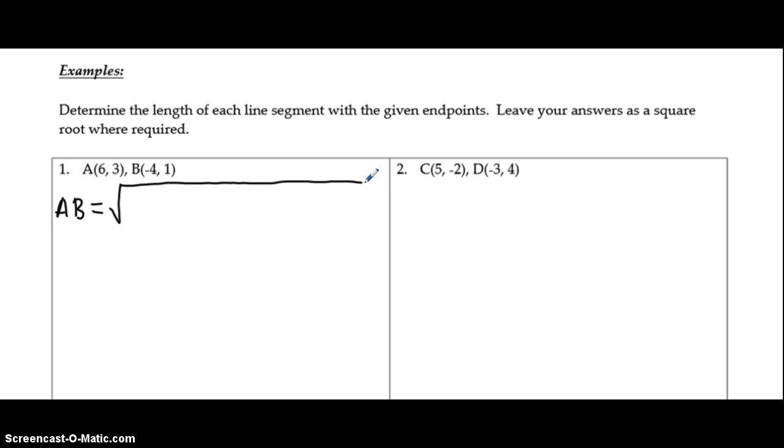So AB is equal to the square root - nice long square root bar, make sure it covers up all your data here. So we're going to find our x values, x2 minus x1 in brackets squared plus y2 minus y1.